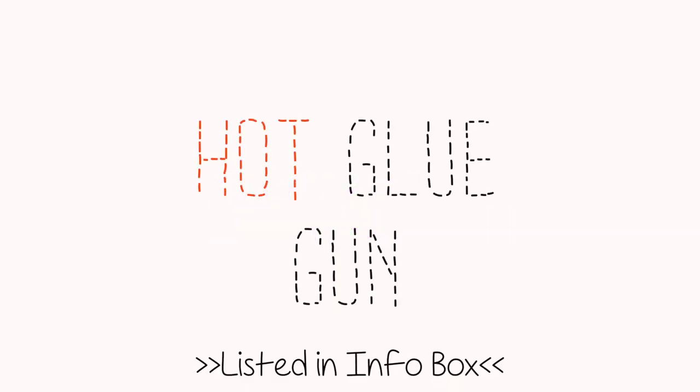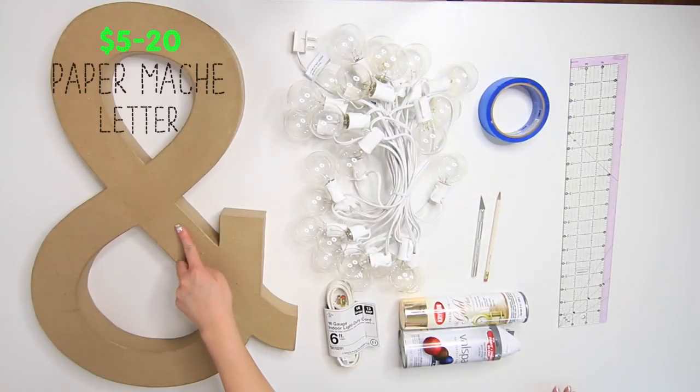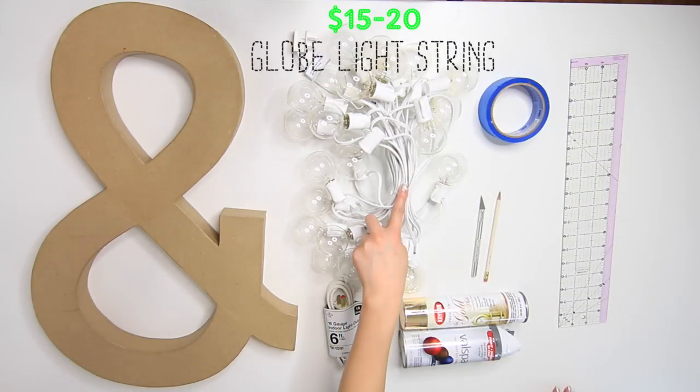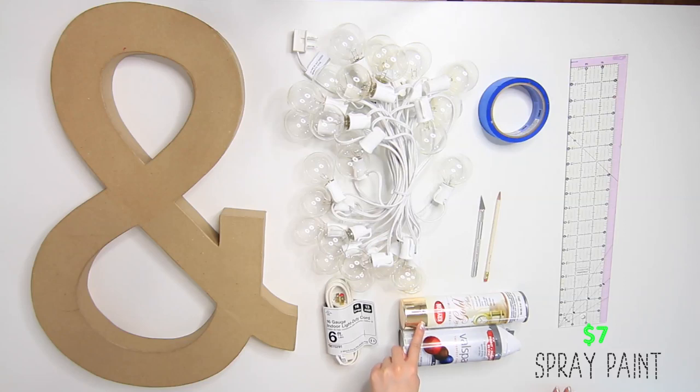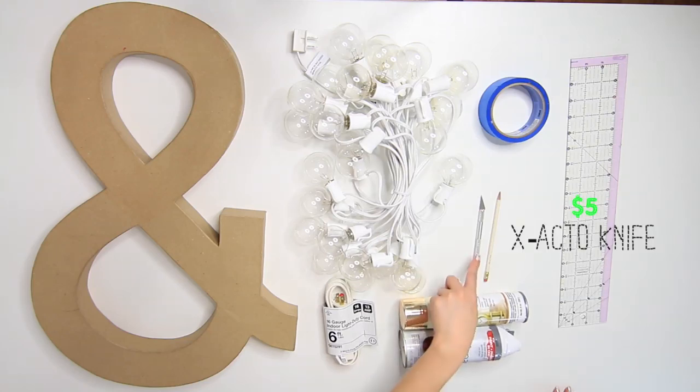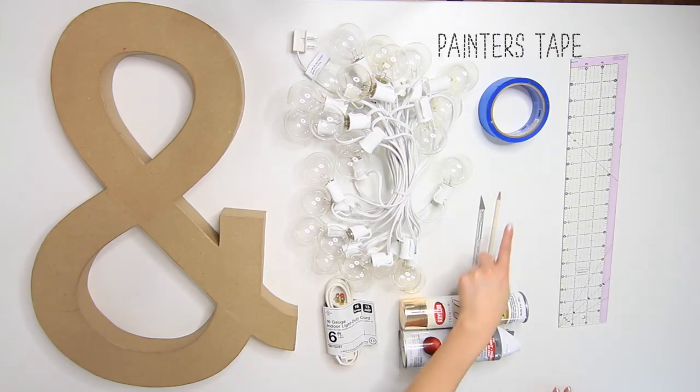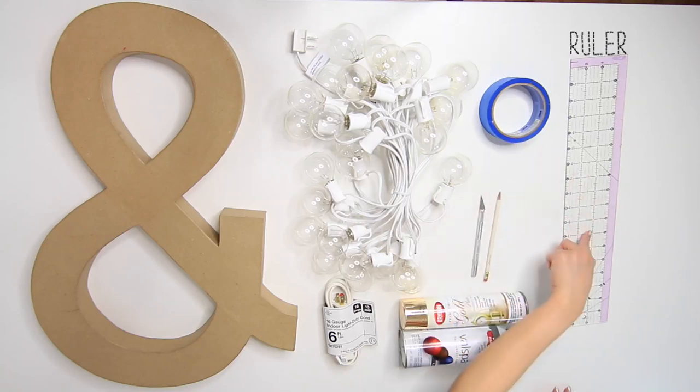Now, to make this, I'm using my favorite tool, the nifty little hot glue gun with lots of glue sticks. I ordered this ampersand letter from Amazon, globe light strings, an extension cord to reach my electric outlet, spray paint. All the details are listed down below. Exacto knife, a pencil, painter's tape or masking tape, and a ruler.